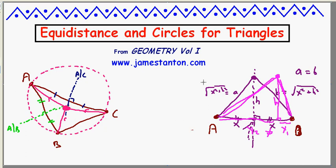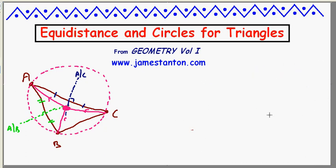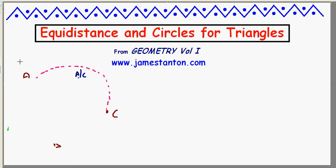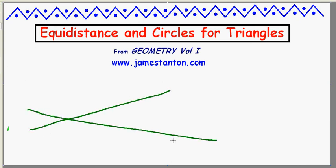That just establishes that we have a circumcircle for a triangle. Now, what about this incircle? Well, let's use equidistance again, but equidistance of a different kind. I'm going to ask now, suppose I'm given two lines, before I had two points, and I'm going to have equidistance between two lines. Can I find, describe the points that are equidistant from these two particular lines? First of all, let me draw them. There's one line, there's another line.